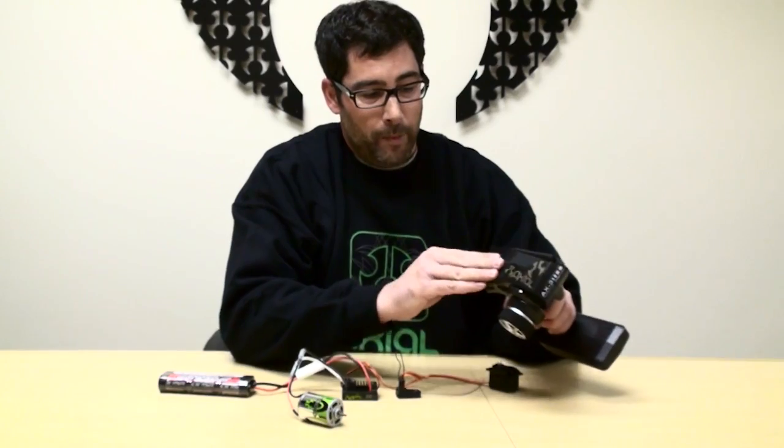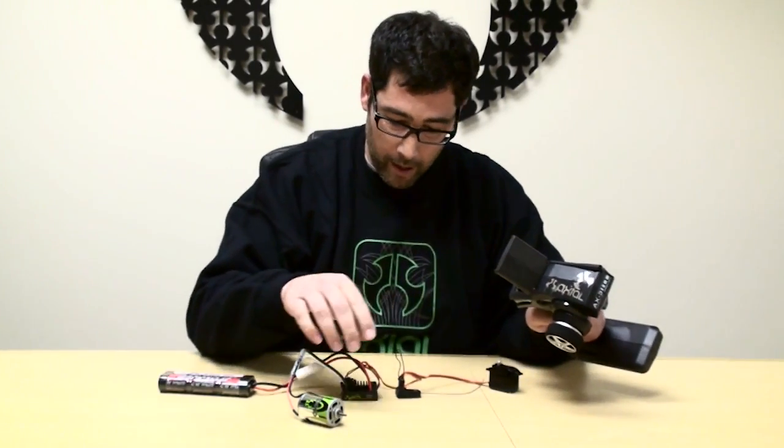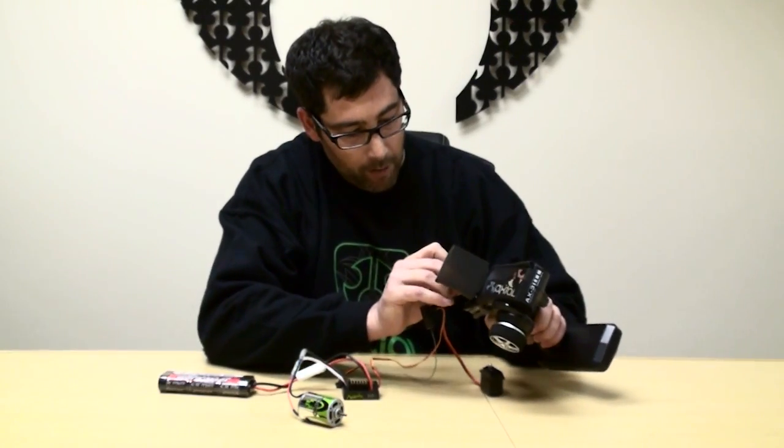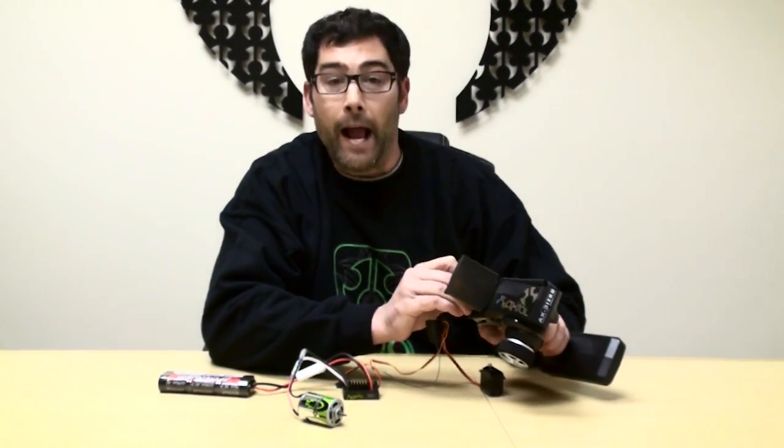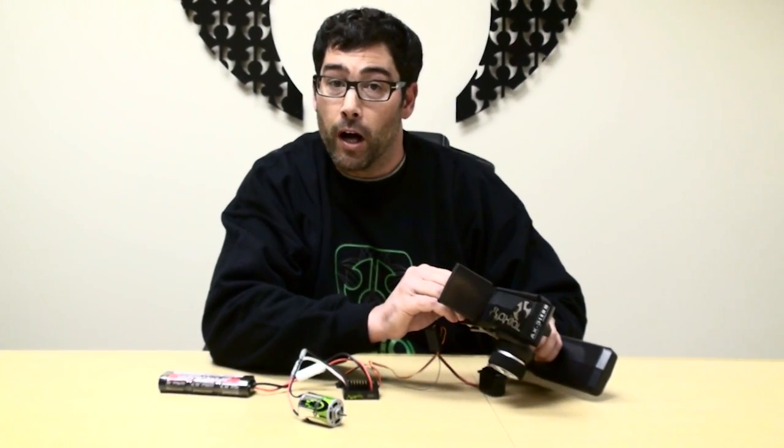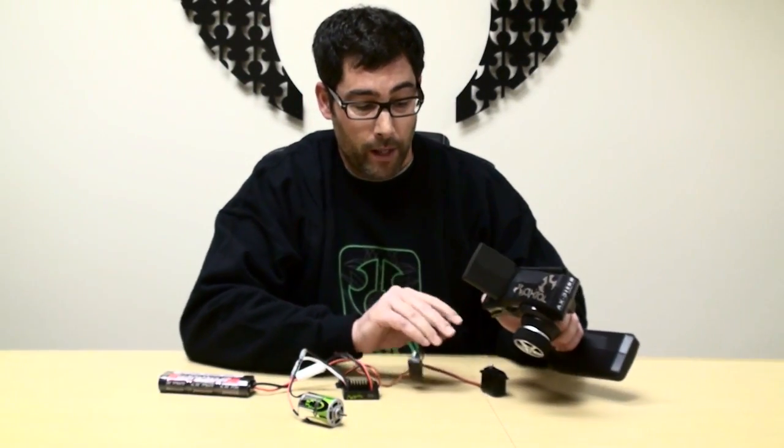So we'll open up the transmitter here. We'll take this little thing on the bind plug here and press the bind button down on the transmitter. You want to hold it down while you turn on the transmitter. Go ahead and let it go.